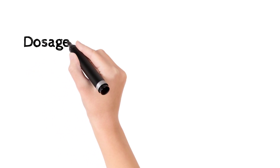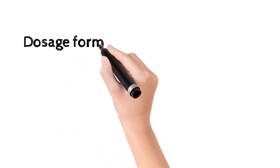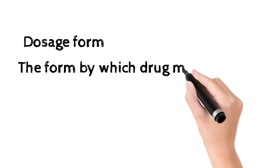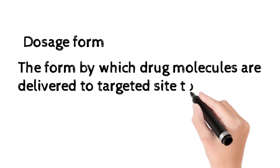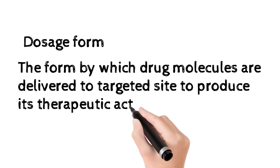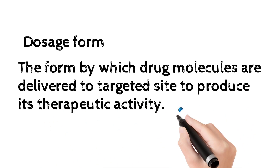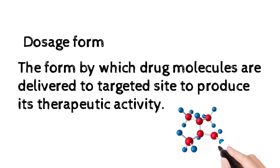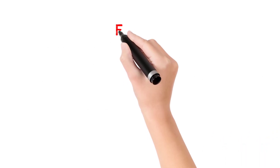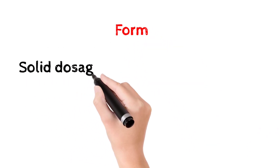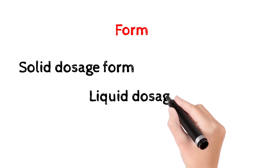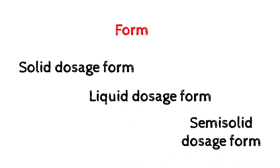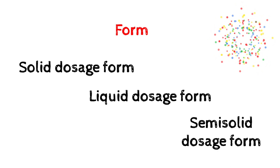In the introduction part, the definition of a dosage form is nothing but the form by which drug molecules are delivered to the targeted site to produce their therapeutic activity. If the form is solid, it is called a solid dosage form; if it is liquid, it is called a liquid dosage form; if it is semi-solid, it is called a semi-solid dosage form.